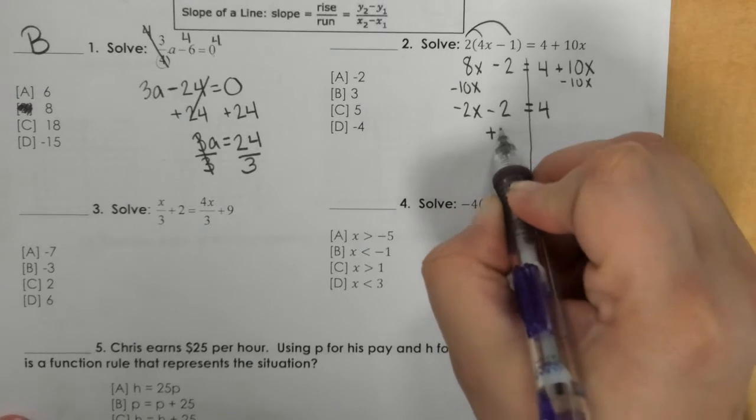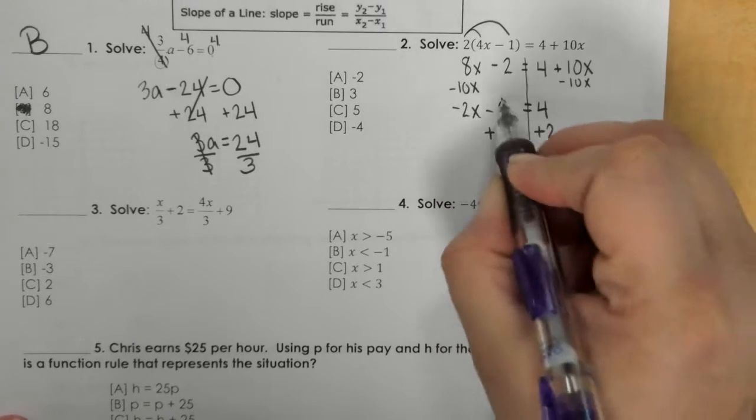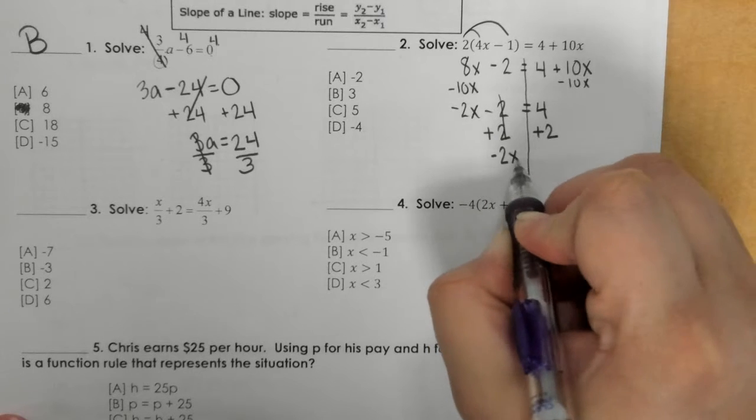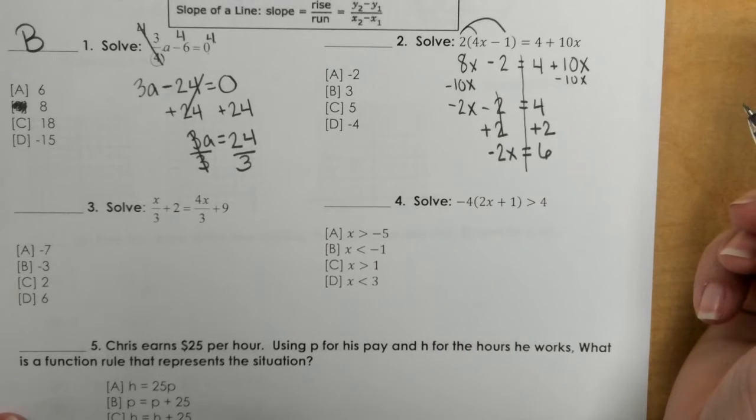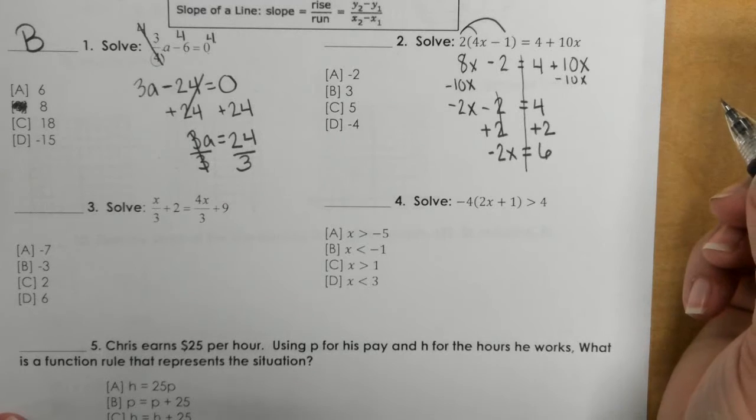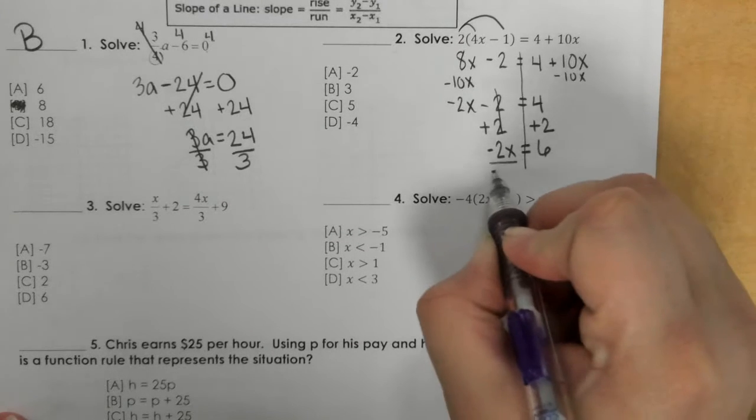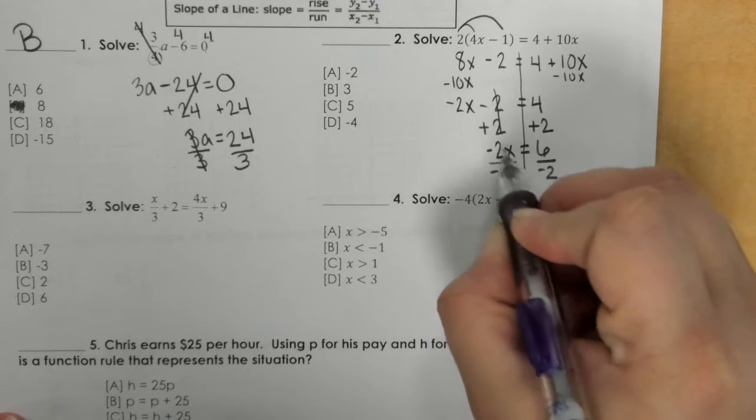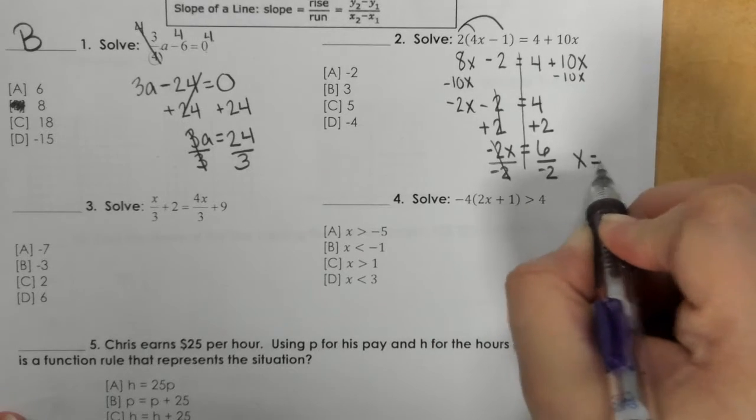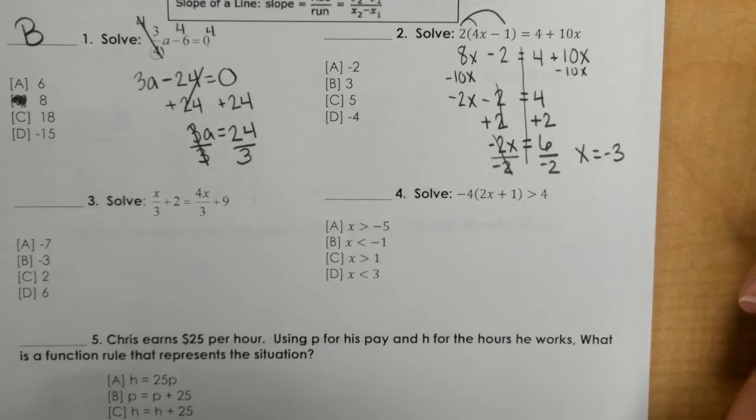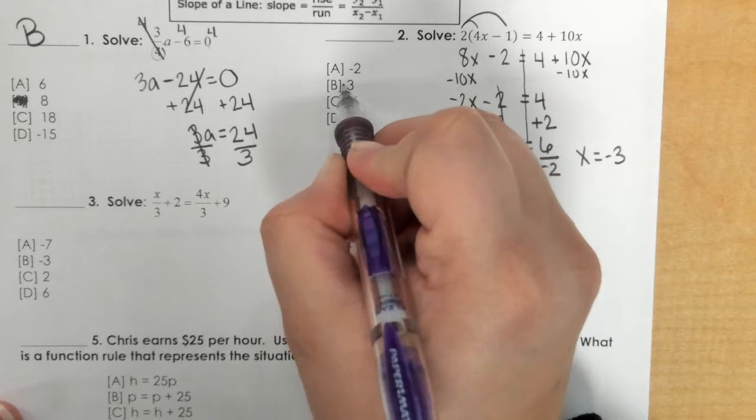Then we add 2 to both sides and we get negative 2x equals 6, and then I divide both sides by negative 2 and we get negative 3. So there's a typo, we need to put a negative right here on B and get negative 3.